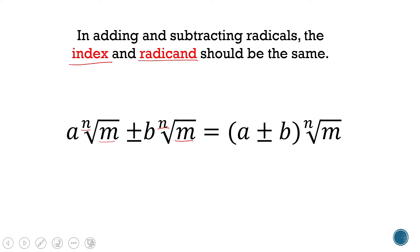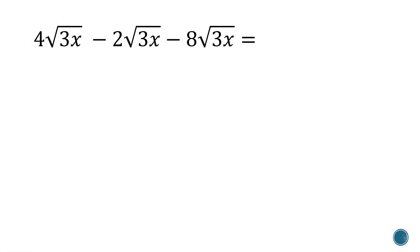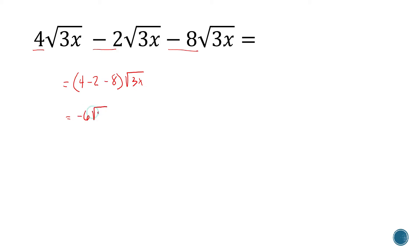Let's go to the examples. Here, all of these are square root — check. Second, the radicands are also the same; they're all 3x — check. So we can just perform the operation on the coefficients: 4, negative 2, and negative 8. That's 4 minus 2 minus 8, square root of 3x. So 4 minus 2 is 2, minus 8 is negative 6. So this is negative 6 square root of 3x.